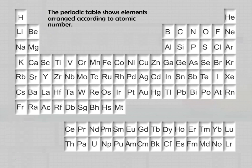The Periodic Table shows elements arranged according to atomic number. Atomic number is the total number of protons in the nucleus.